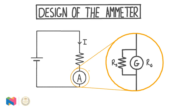In this video, we're going to be talking about the design of the ammeter, which is a device we use to measure current in a circuit. We'll see how we can make an ammeter using a galvanometer and a resistor known as a shunt resistor, and we'll see how to calculate the required resistance of the shunt resistor based on the properties of the galvanometer and the size of the current that we want to measure.